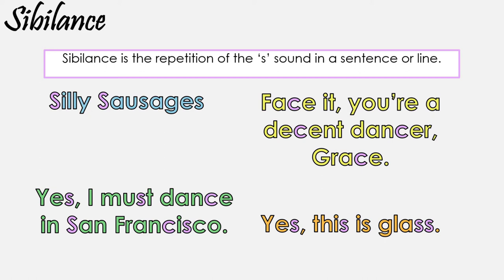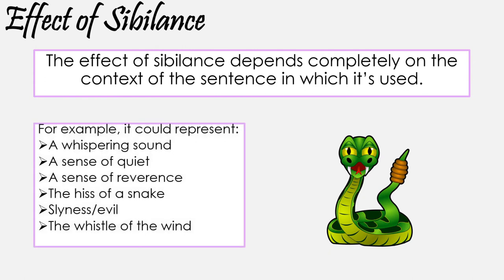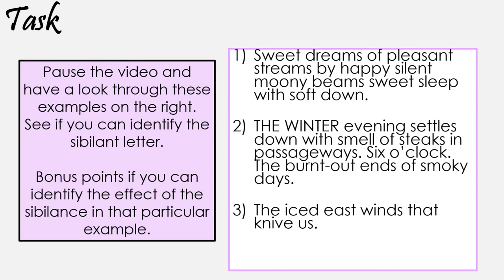Now some people even include the SH and CH sounds in sibilance too. So what's the effect of sibilance? Similar to alliteration, it depends on the context of a sentence. Repeating the S could represent a whispering sound, reinforcing a sense of quiet. It could evoke the hiss of a snake and represent evil and slyness or anger, amongst many other things. It all depends on the context of the sentence. Pause the video and have a look through the examples. See if you can identify the sibilant letters, and bonus points if you can note down the effect too. But be careful of words that end in S — sometimes they're pronounced as an S and sometimes as a Z, so it's the S sounds that are actually sibilant.